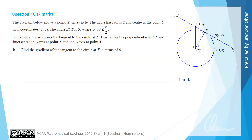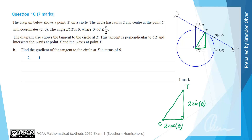For part B, we are asked to find the gradient of the tangent to the circle at T in terms of theta. Thinking back to the right-angled triangle, it had a rise of 2 sine theta and a run of 2 cos theta between points C and T. So the gradient of CT is rise over run, which is 2 sine theta divided by 2 cos theta, simplifying to tan of theta.